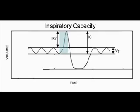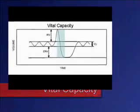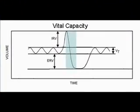The vital capacity is the amount of gas that can be exhaled after a maximal inspiration. So what you would do is take a big deep breath all the way in, and then blow it all the way out as far as you can — that would be the vital capacity. Therefore, it includes the inspiratory reserve volume, tidal volume, and expiratory reserve volume.